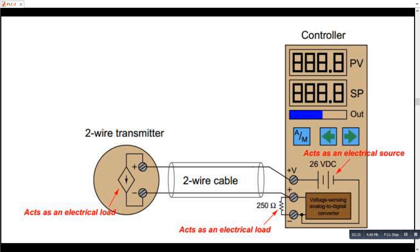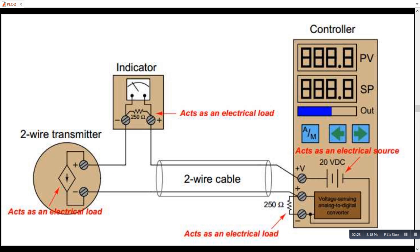And this is the two wire transmitter, the input side in which we have the voltage source inside the controller. And this is another transmitter circuit in which we have an indicator circuit in between which also shows the current value.